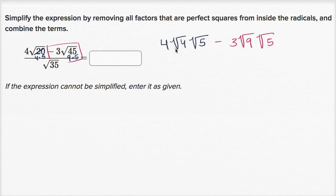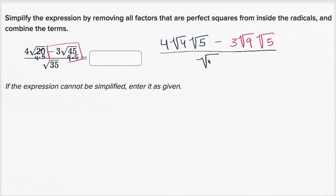And all of that is going to be over the square root of 35. Are there any perfect squares in 35? Well, 35 is seven times five — neither of those are perfect squares, so we just leave that as the square root of 35. The square root of four is two, and since this is the principal root we're thinking about the positive square root. The square root of nine is three.